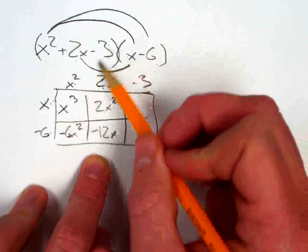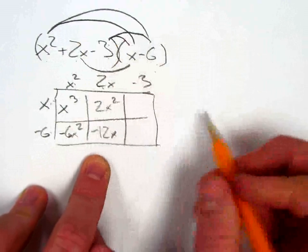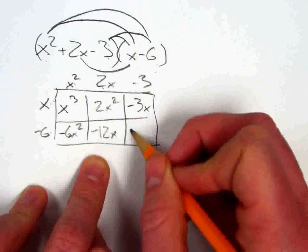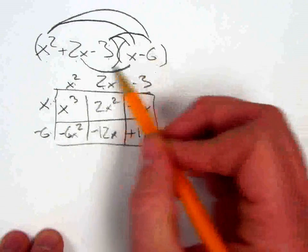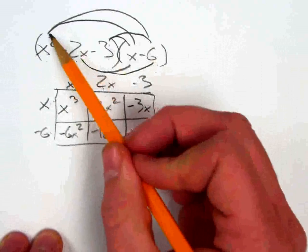Then I'd go to my last term, the negative 3. Once I distributed it into both, I'd have negative 3x and plus 18. I know I've drawn a lot of lines here, but basically look what I've done.